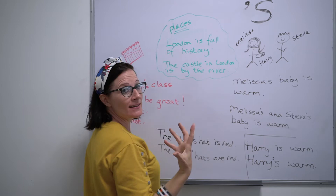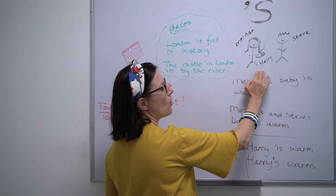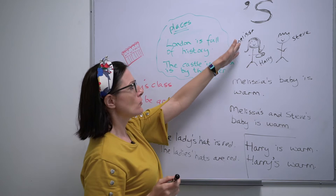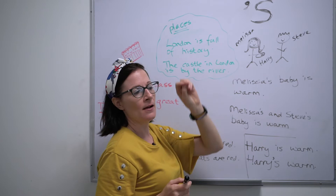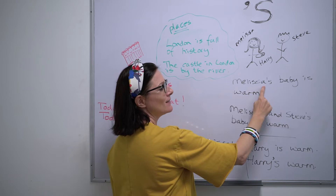Here we have the apostrophe S. Let's imagine we have Melissa, we have Steve and we have little baby Harry. Now we can say 'the baby of Melissa' or we can say 'Melissa's baby.' Melissa is the mummy, the baby belongs to Melissa. It's not the baby of Maria, or Natalia, or Julieta — it's the baby of Melissa. Consequently, in English we put an apostrophe S and say Melissa's baby.